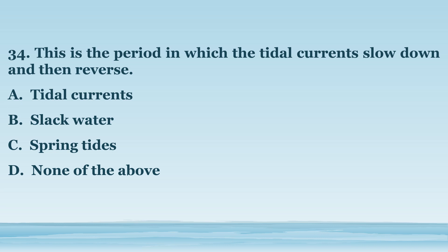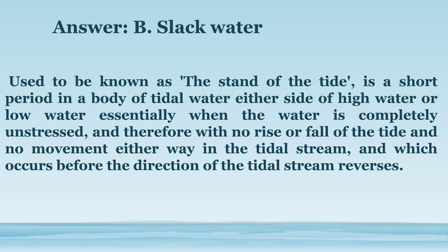Number 34. This is the period in which the tidal currents slow down and then reverse. A. Tidal currents. B. Slack water. C. Spring tides. D. None of the above. The answer is letter B. Slack water. Used to be known as the stand of the tide — a short period in a body of tidal water either side of high water or low water, essentially when the water is completely unstressed and with no movement in the tidal stream, occurring before the direction of the tidal stream reverses.